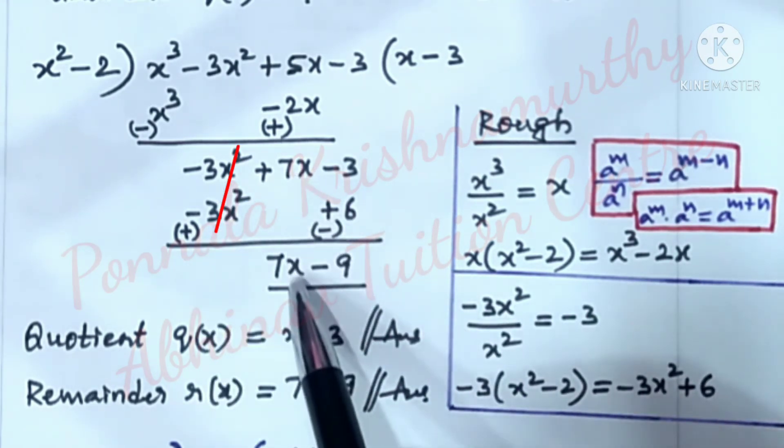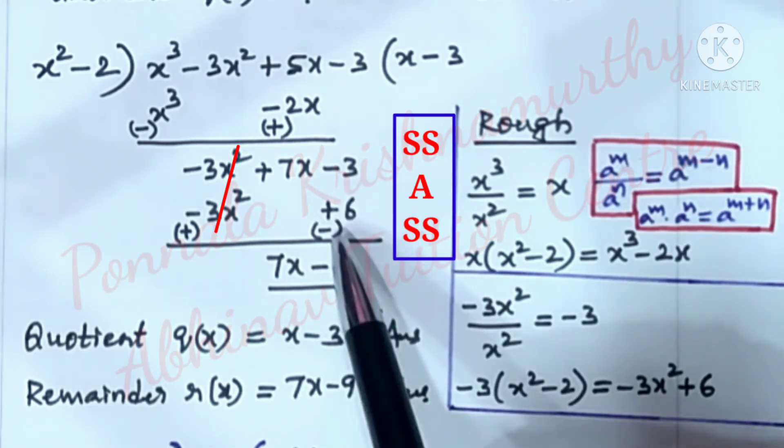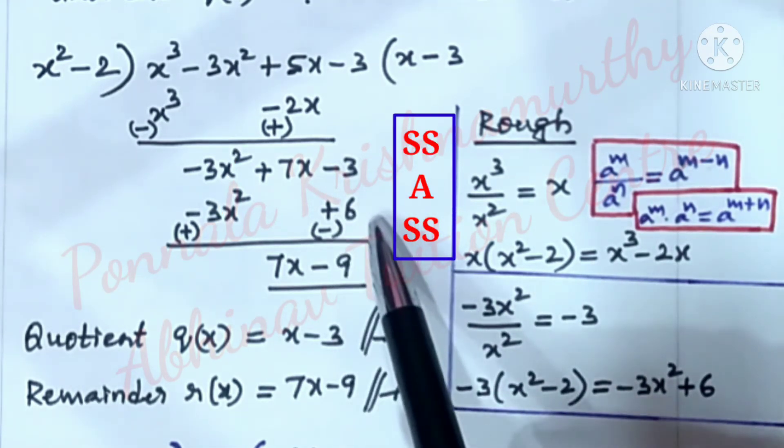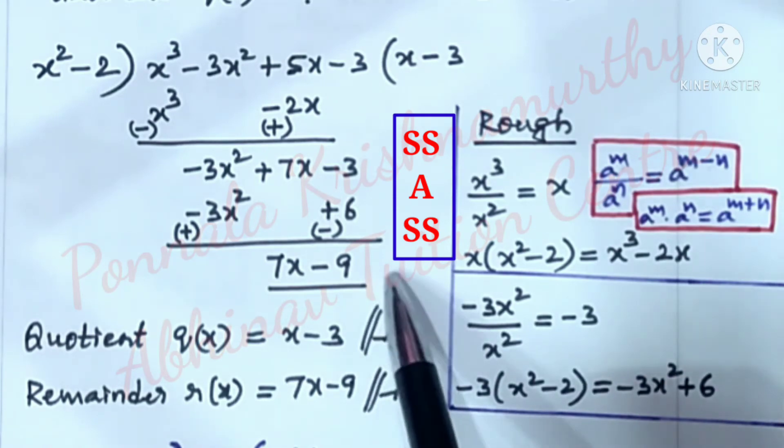Now, these two are cancelled. Here we have 7x and same signs, addition, same sign. -3 - 6 becomes -9.